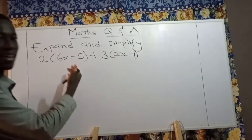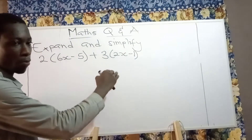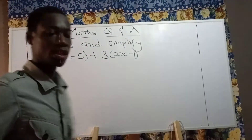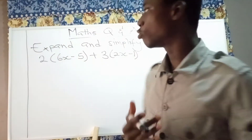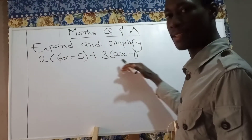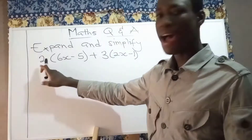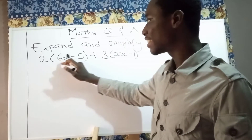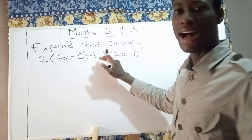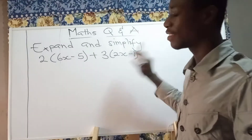To expand and simplify an algebraic expression in this form, we are having brackets and numbers multiplying those in the brackets. What you are going to do first is expand these brackets. By expansion, we mean multiply the number outside the bracket by each term in the bracket.